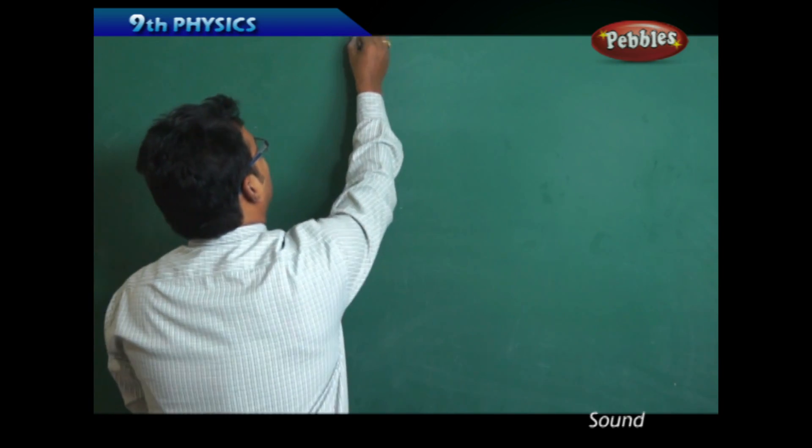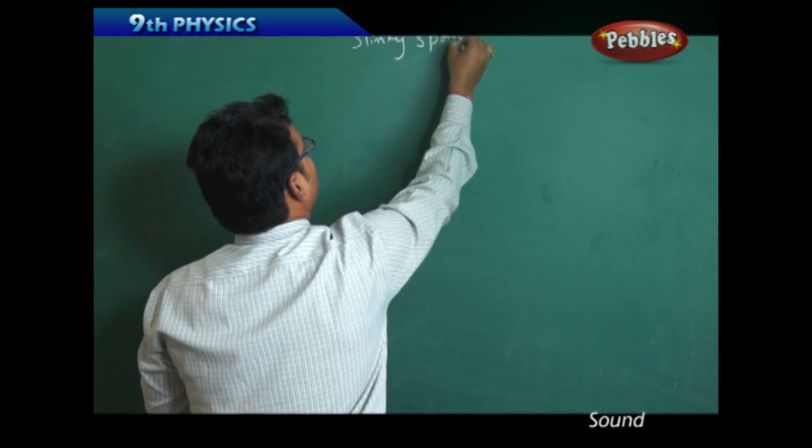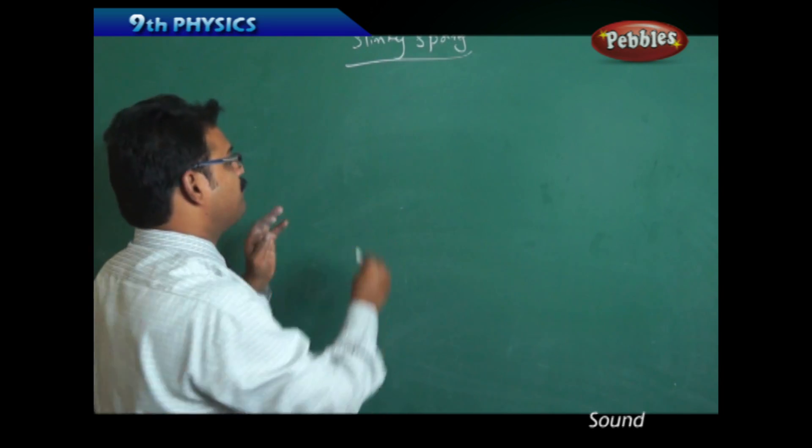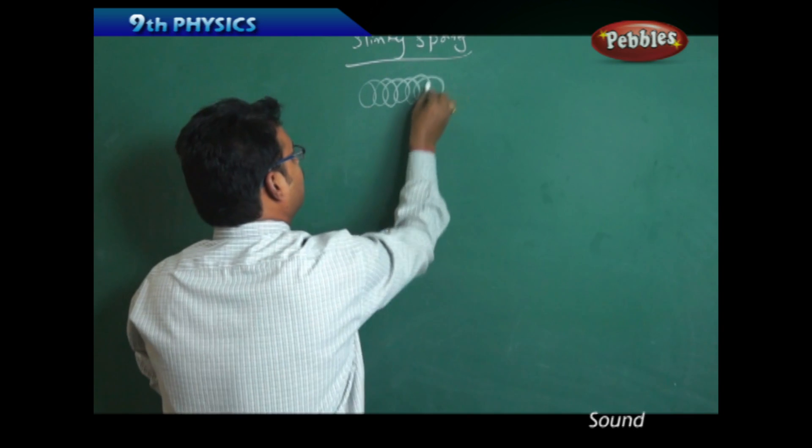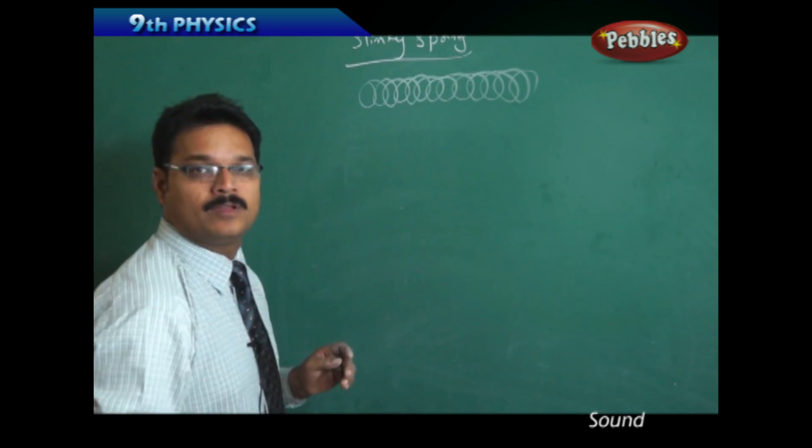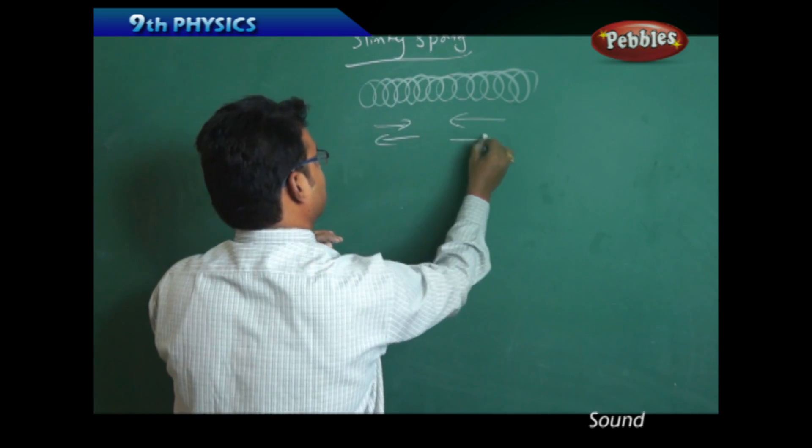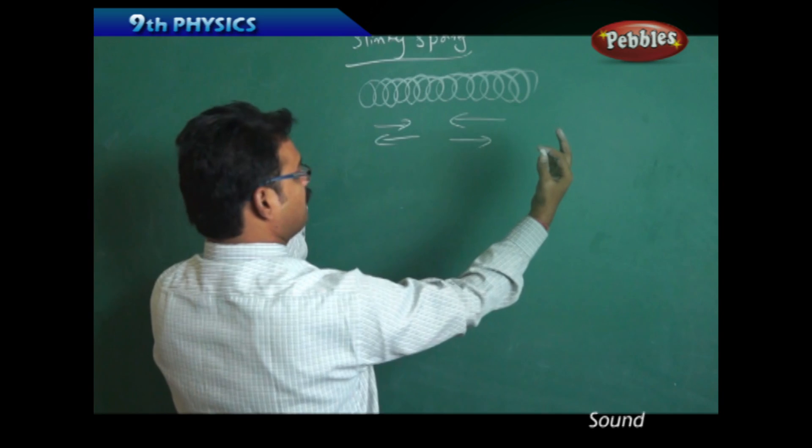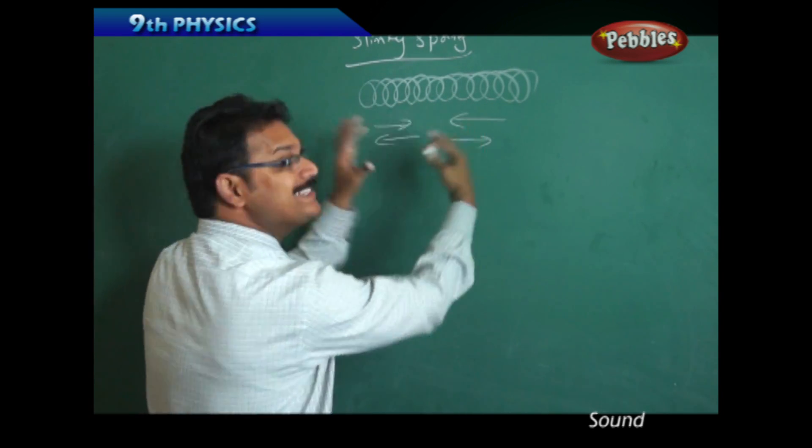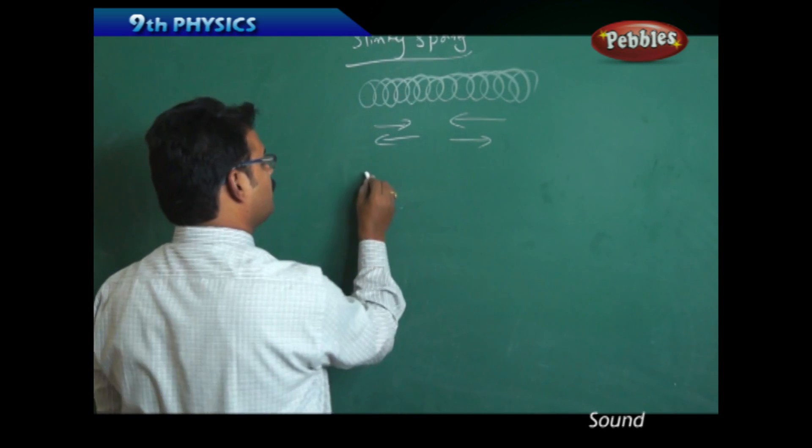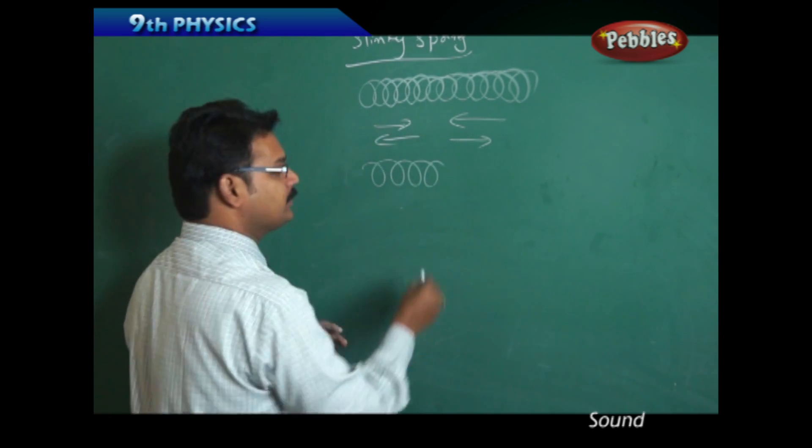If you have a slinky spring and move it like this, applying force, you compress and spread, compress and spread. When you do this continuously, you'll observe that in some places you have compressions and in some places the loops are spread out.